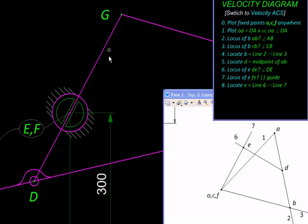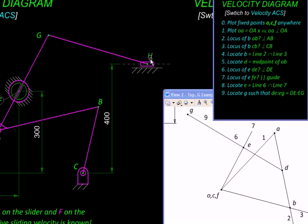Then we can extrapolate d e up to g in a certain proportion like this and get the velocity image of g. To get velocity image of h, again we will use two loci.